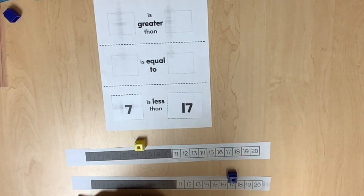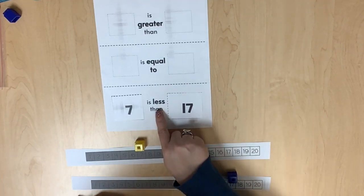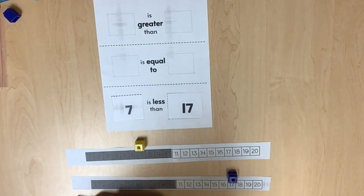The greater than, less than, and equal to symbols are not part of Kinder standards. Rather, symbols are introduced in first grade to compare quantities. Kinder's focus is on using the comparative language and describing the quantities in relationship to one another.